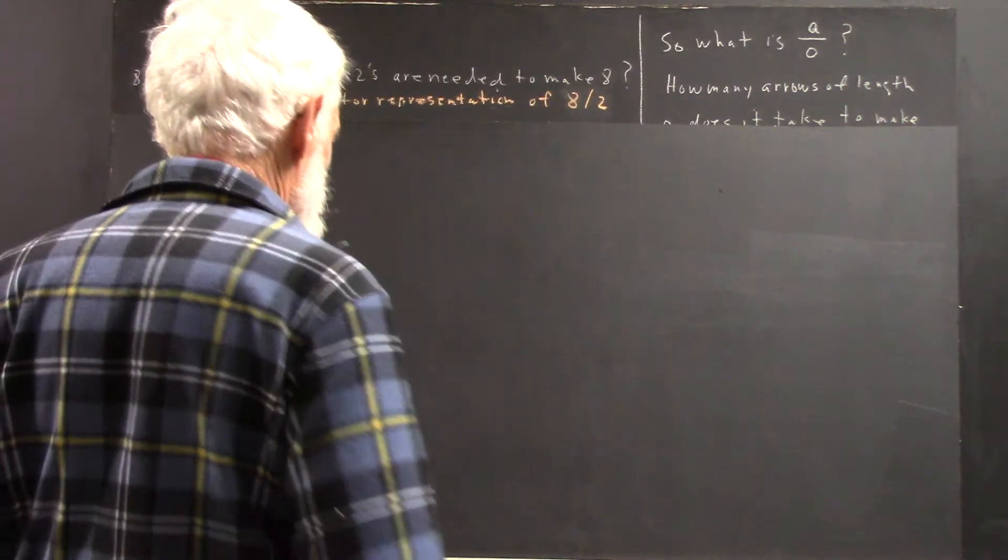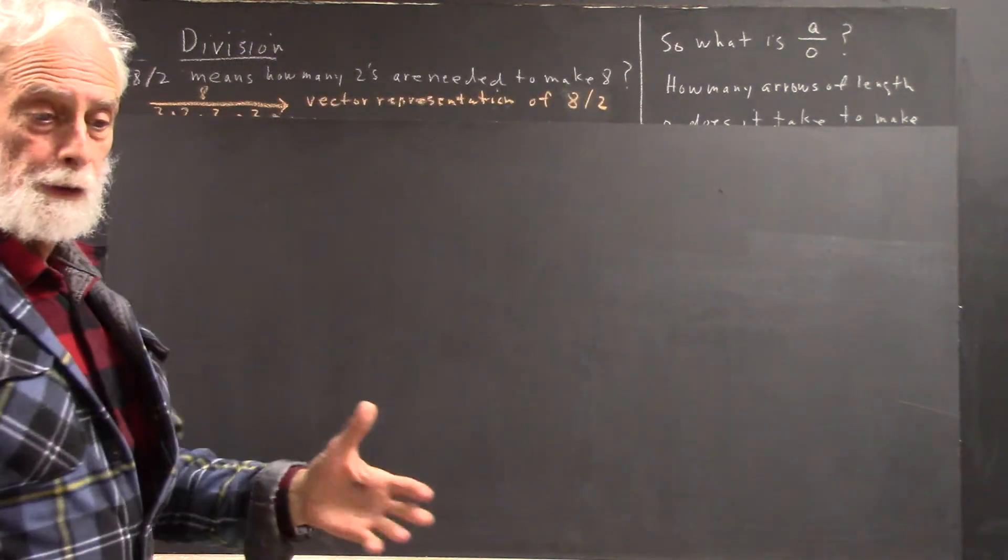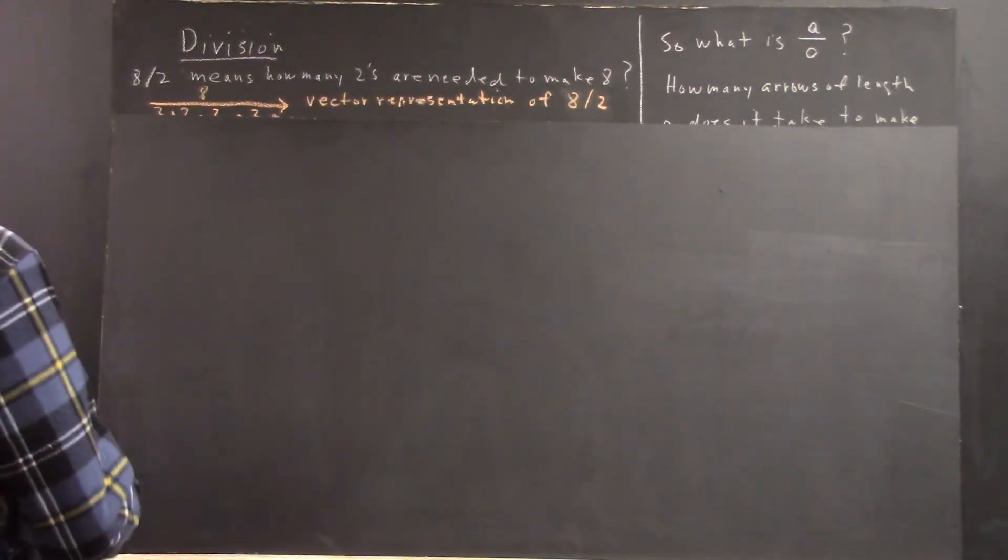I gave it a little more thought and decided I would explain why 0 over 0 isn't defined. Okay, so let's see.